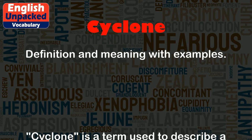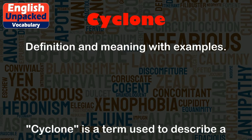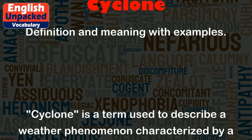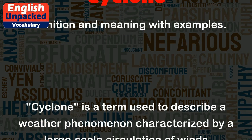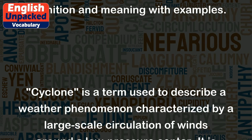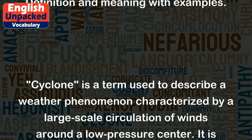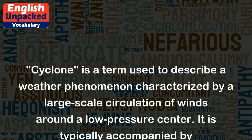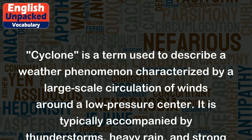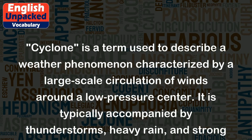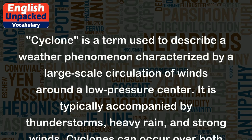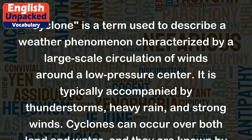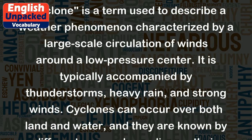Cyclone. Cyclone is a term used to describe a weather phenomenon characterized by a large-scale circulation of winds around a low-pressure center. It is typically accompanied by thunderstorms, heavy rain, and strong winds.